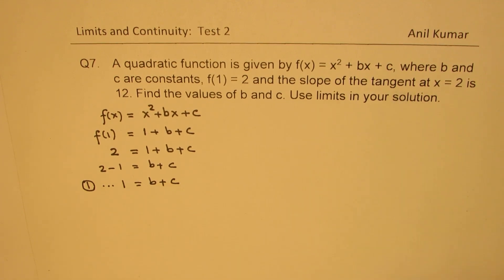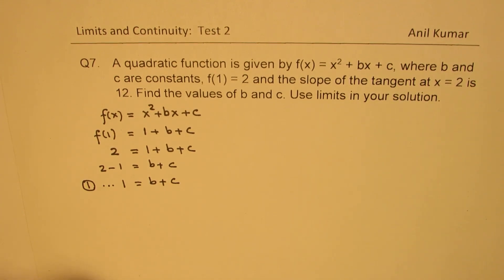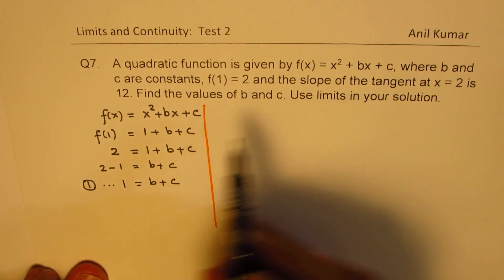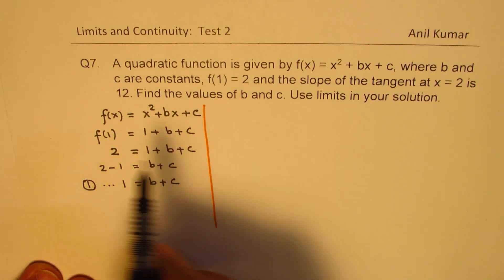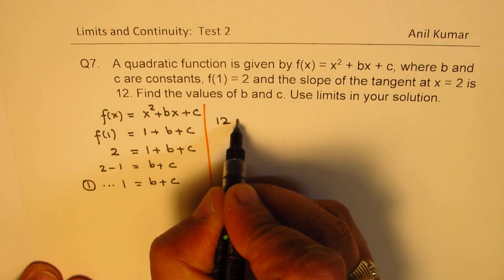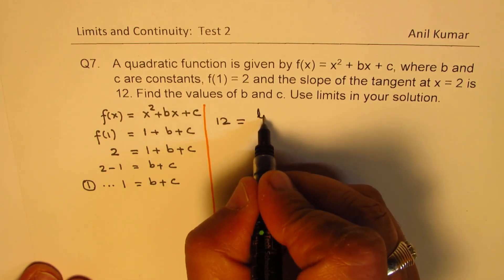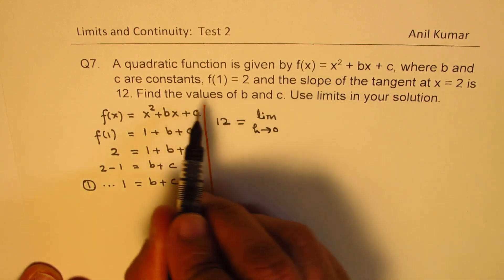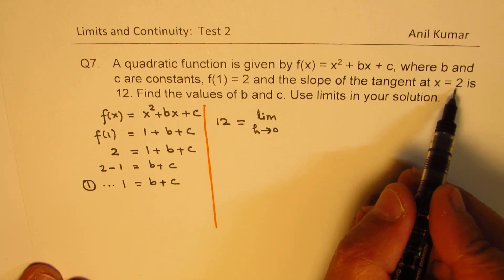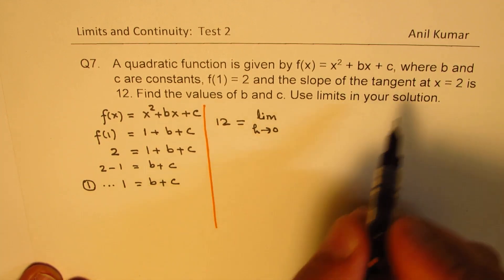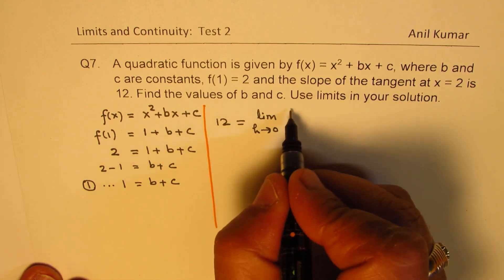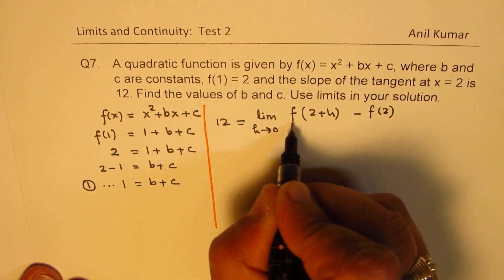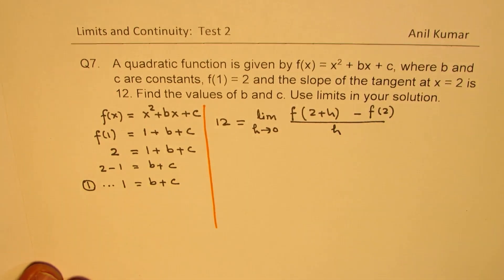Now the second condition given to us is about the slope of the tangent line. We can use difference quotient method to find the second equation. So slope 12 is basically the limiting factor when h approaches 0. We are considering two points, one very close to 2 and one point is of course 2. So that is [f(2+h) - f(2)]/h. So that gives you slope of a tangent line.